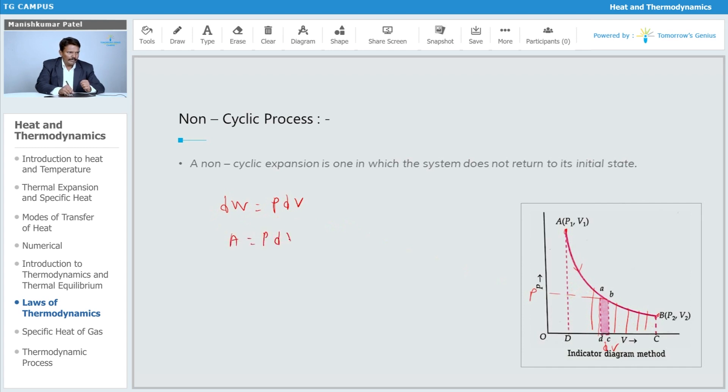When you add all these areas, this P dV is nothing but your work done. The total work done is the integration ∫P dV from V1 to V2. This is how we can find the work done.